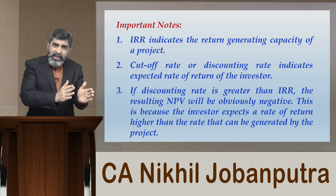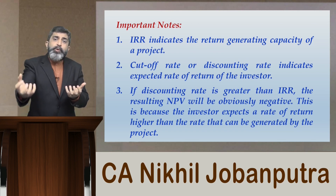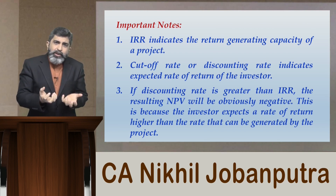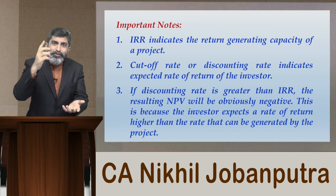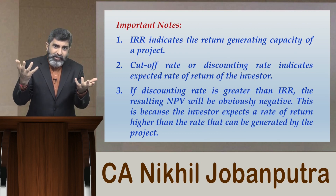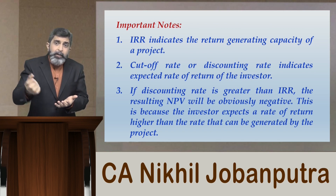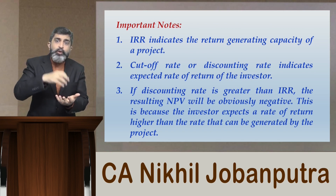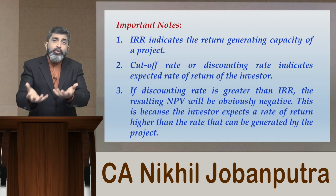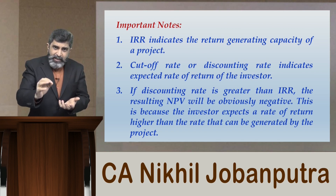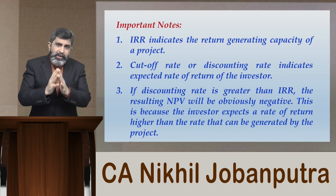What will happen if the discounting rate is the same as IRR? Whatever rate of return the project is generating is the same rate you are expecting, so the resulting NPV will be zero — there is no surplus arising. In that case the project is still acceptable. And when the discounting rate is lower than IRR, the project is obviously going to provide a positive NPV, and that is when you will definitely accept the proposal.